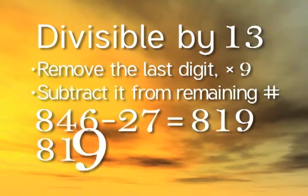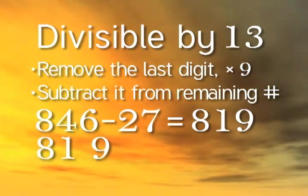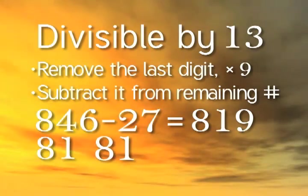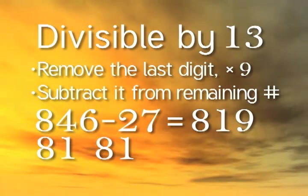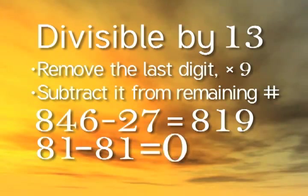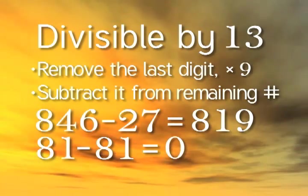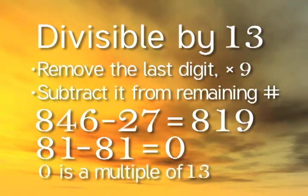Take 819, remove the 9, multiply it times 9, and you get 81. 81 minus 81 equals 0. If you end up with 0, you've passed the divisibility test.